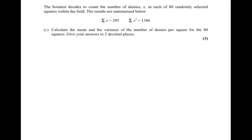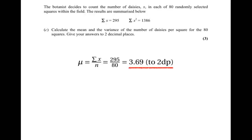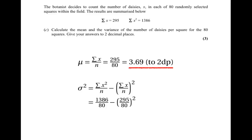The next part tells us the botanist measured daisies in 80 randomly selected squares, and we need to calculate the mean and variance. The mean is sigma x divided by n, which is 295 divided by 80, giving 3.69 to two decimal places. The variance formula gives sigma x-squared over n minus the square of the mean: 1386 divided by 80 minus the square of 295 over 80, which gives 3.73 to two decimal places.